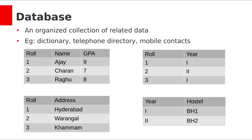Let's see all of them in detail. It really doesn't matter whether you are using paper or computer software program to collect and store the data. As long as you are gathering data in some organized manner for a specific purpose, it is called a database. Some examples may be a dictionary, telephone directory, or mobile contacts. Information can be stored in different ways, and each of these ways is known as a database model.